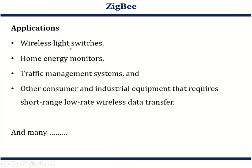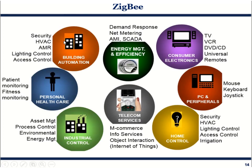Since Zigbee is designed for low power and small area applications, its uses include wireless light switching, home energy monitors, traffic management systems, and other consumer and industrial equipment requiring short range and low data rate transfer. For building automation: security systems, area light control, and access control. Other areas include energy management, consumer electronics, PC and peripherals, home control, telecom services, healthcare services, and industrial control.